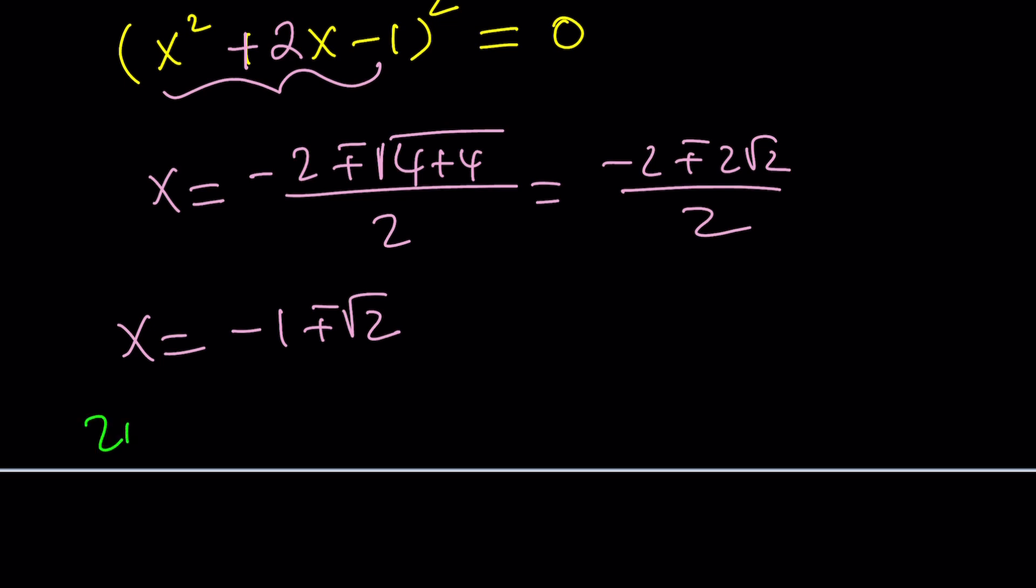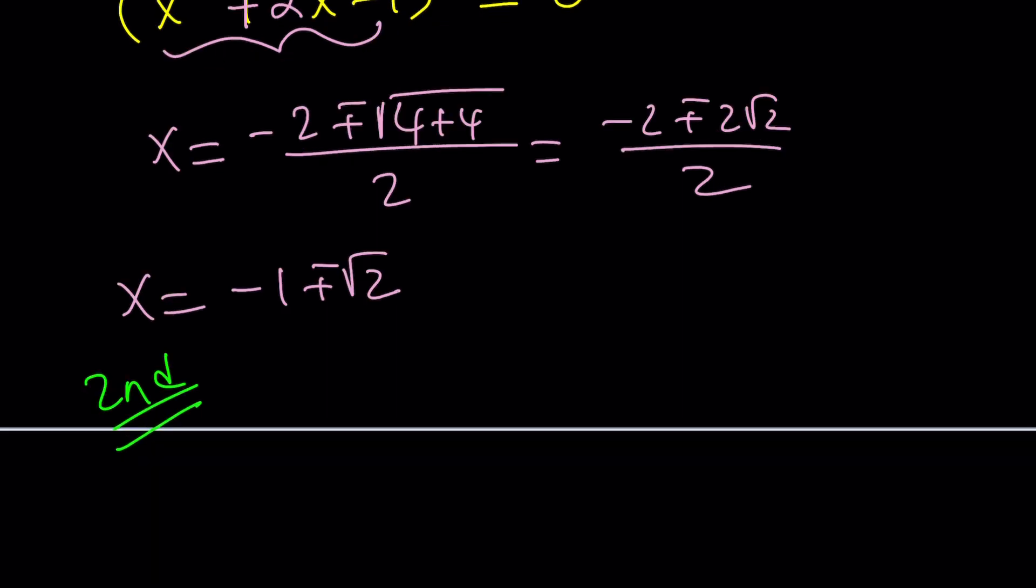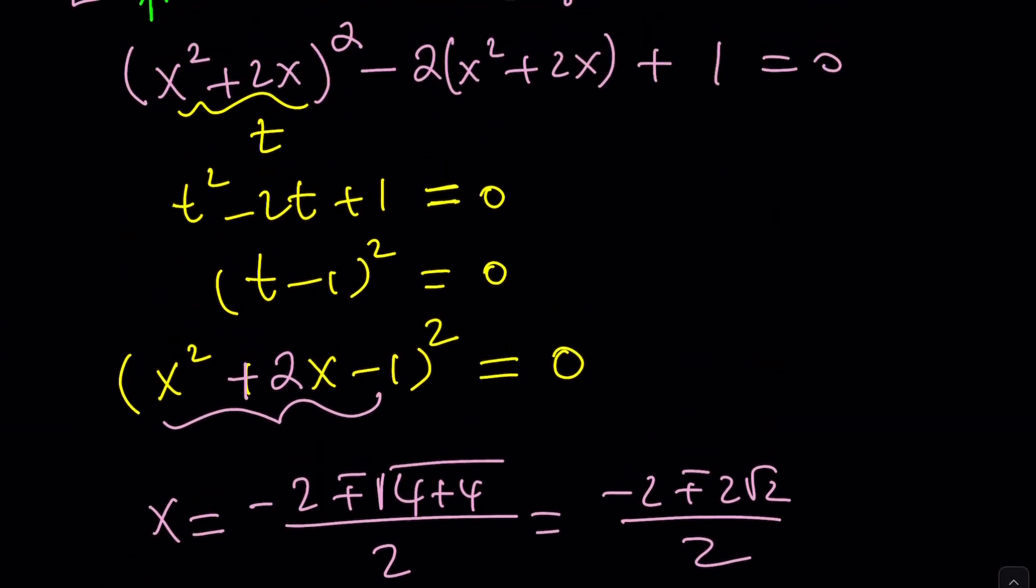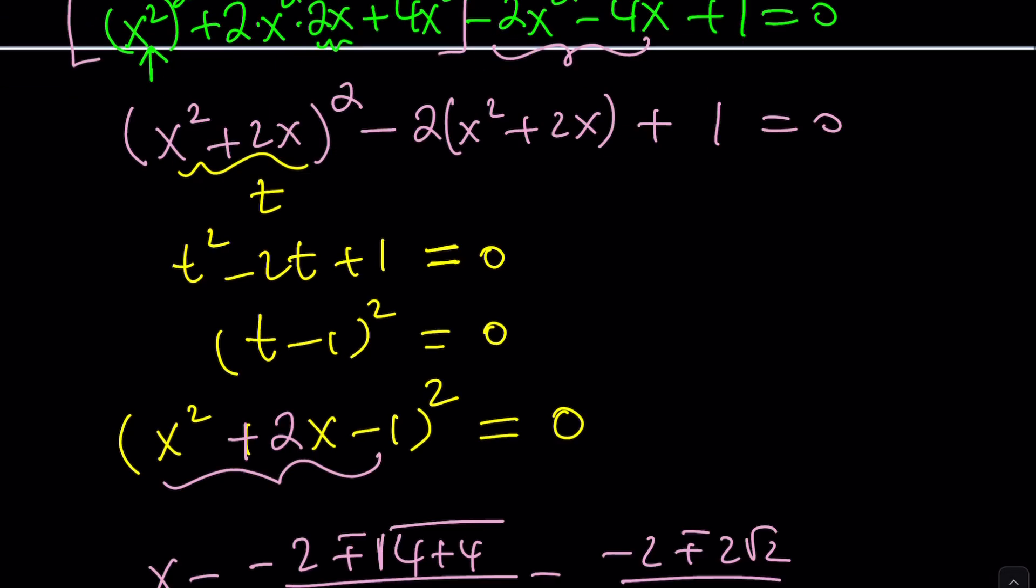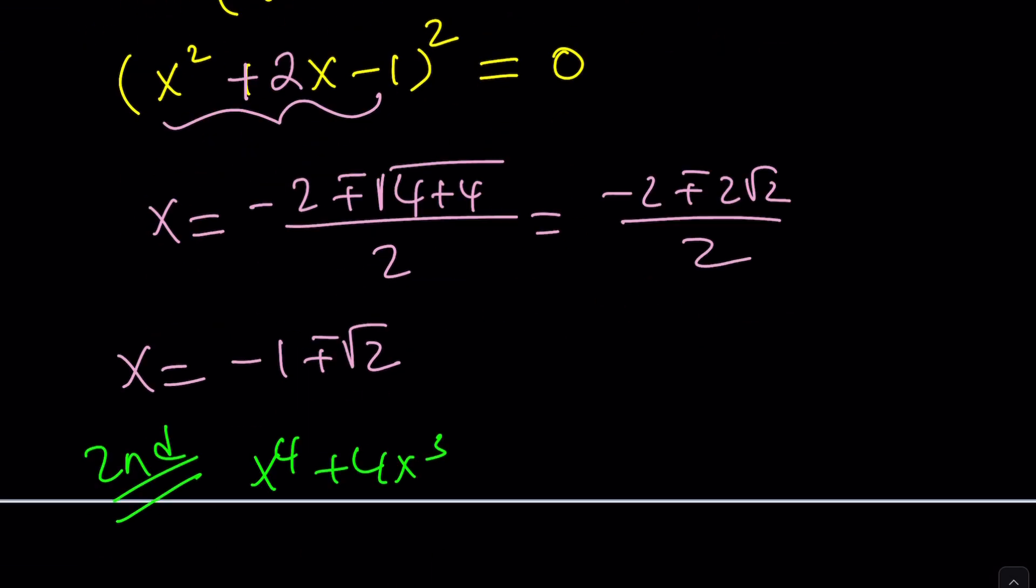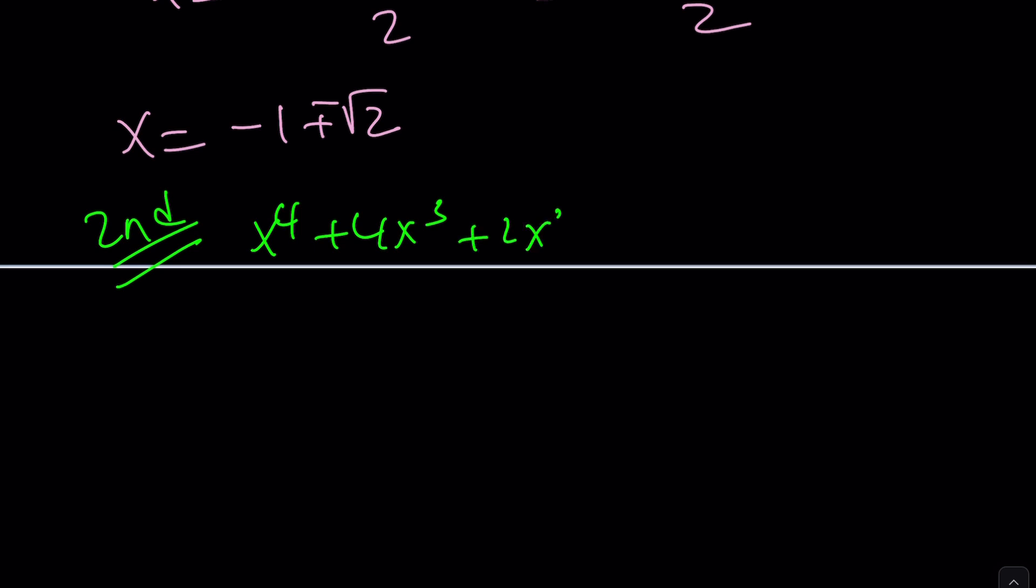All right. Let's go ahead and take a look at the second method because we still have three more to go. Are you ready? So we're basically going to pick it up from here. x⁴ + 4x³. And I think we had 2x² - 4x + 1 = 0. Nice.